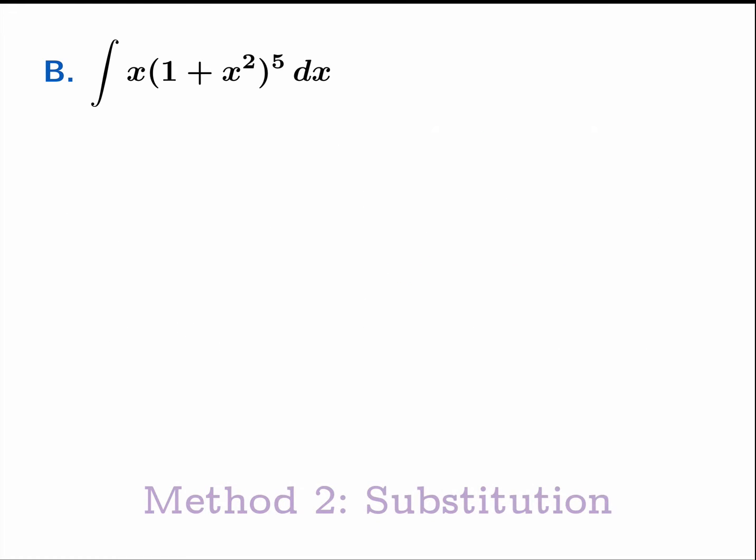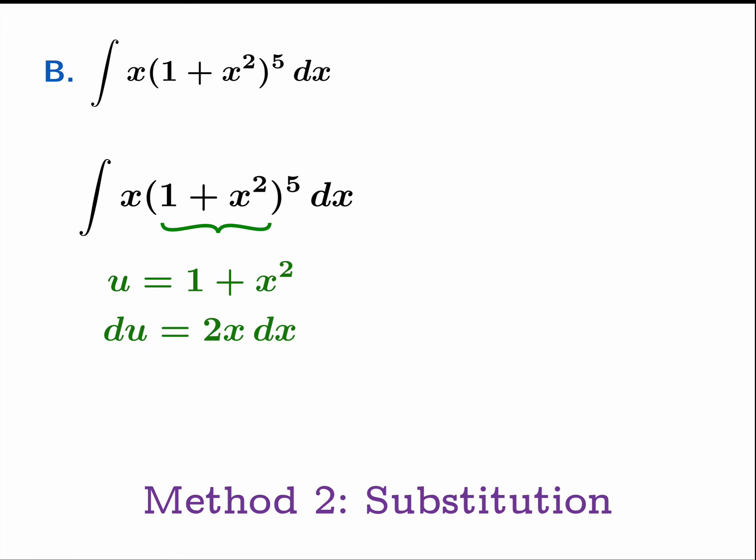So what we'll do in this case is we will apply substitution. And we will take 1 plus x squared to be our new variable. We'll call it u. du then is 2x dx. And 1 half du is going to be x dx. And with all of this, we are able to rewrite our integral in this form. Let's just make sure that all the pieces have been accounted for. So 1 plus x squared to the 5th is now u to the 5th. And x dx is now 1 half du. So we've taken into account all the parts of the original integral. And we can proceed.